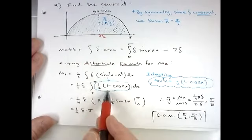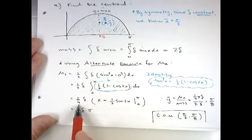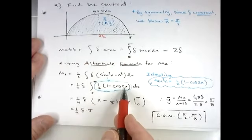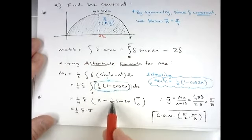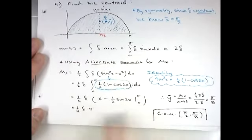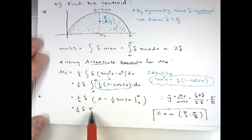So we replace that, we can pull out the one half, get a one fourth. The integral of one is x, integral of cosine of 2x is one half sine of 2x, and if you plug in from pi to zero we get one fourth delta times pi.